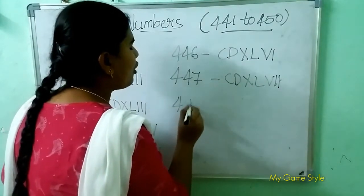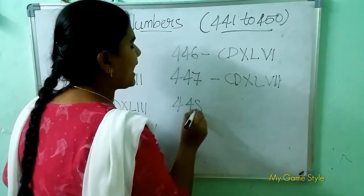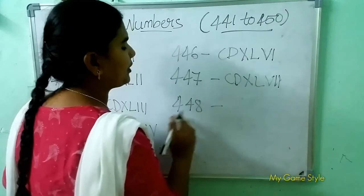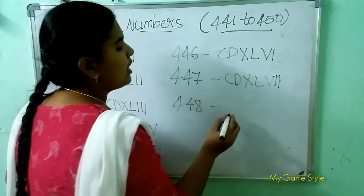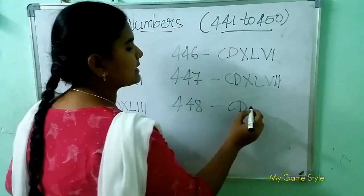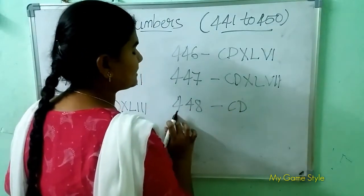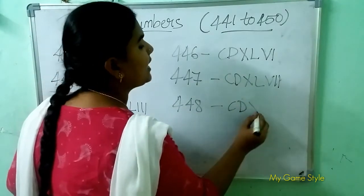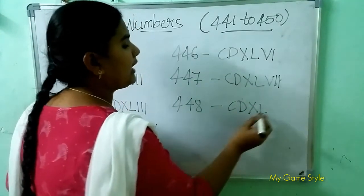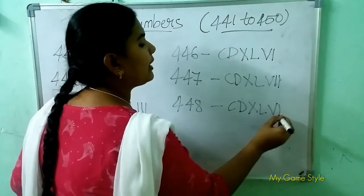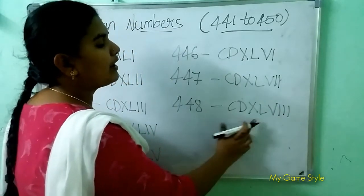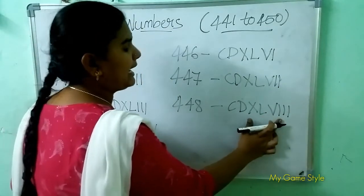Next, 448 means 448. So how to write 448? CD is 400, XL is 40, VIII is 8. So this means 448.